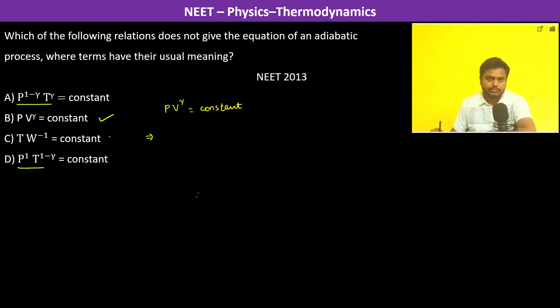Let's do that. We substitute V by T, so therefore we have P times nRT to the power gamma. This has to be again constant. So we have P divided by P to the power gamma into T to the power gamma, which equals P to the power 1 minus gamma times T to the power gamma. This is going to be constant.